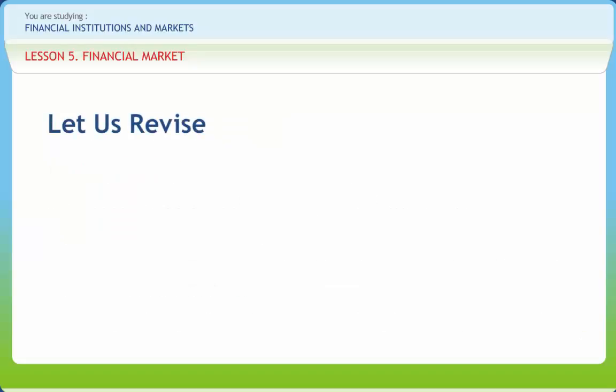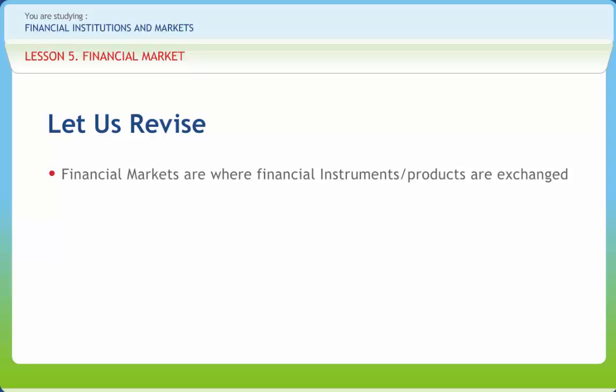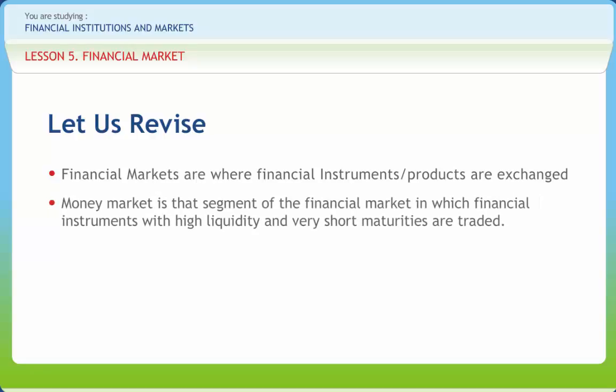Before we end, let us briefly revise what we have studied. Financial markets are where financial instruments or products are exchanged. The market where investment funds like bonds, equities and mortgages are traded is known as the capital market. The primal role of the capital market is to channelize investments from investors who have surplus funds to those who are running a deficit. Money market is that segment of the financial market in which financial instruments with high liquidity and very short maturities are traded. Money market instruments consist of treasury bills, certificates of deposits, commercial papers, etc.